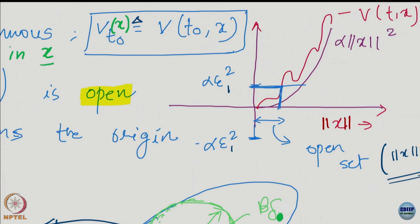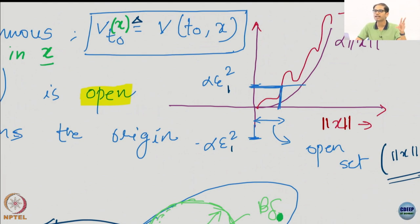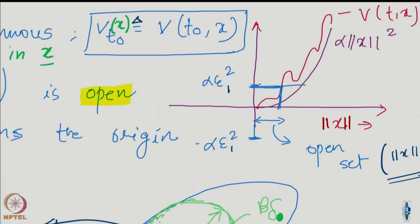You have to be relatively convinced that this is a good representative picture. Don't do proof by picture in any exam — I am using the picture only to help you understand. All I am trying to show from this picture is that this red function is any continuous function. Which means that if this is any continuous function and you notice that the value taken is alpha * epsilon_1 squared — at x equal to epsilon_1, this function will have this value.